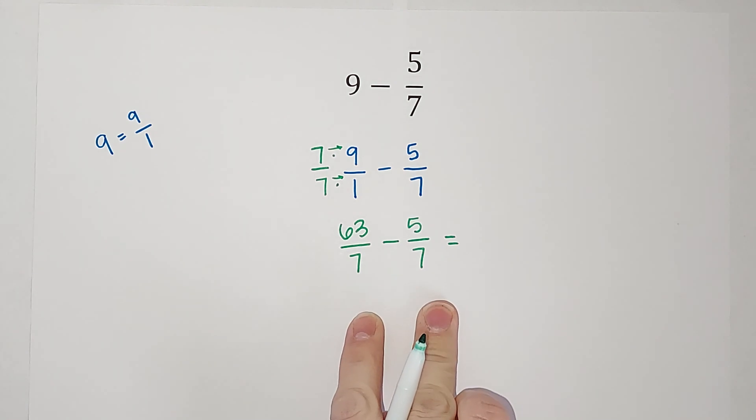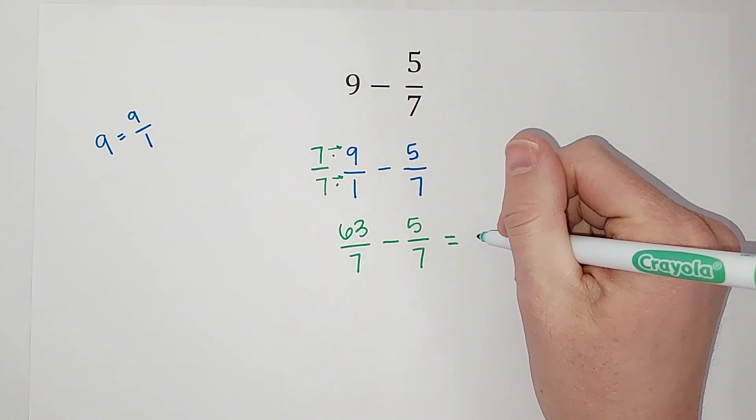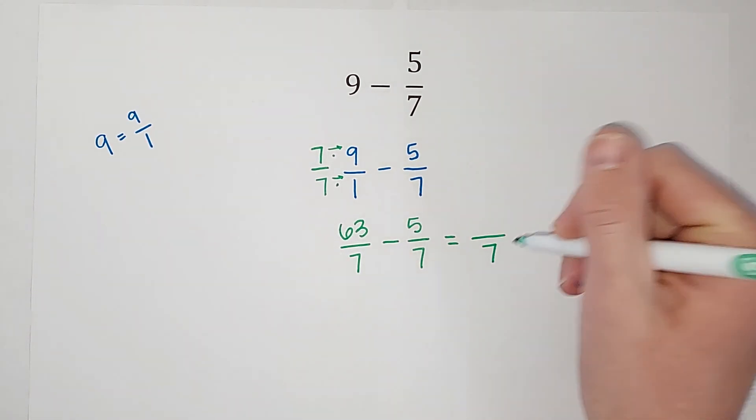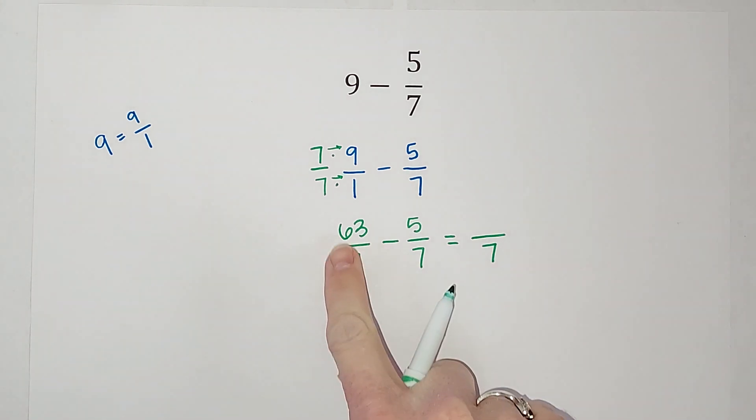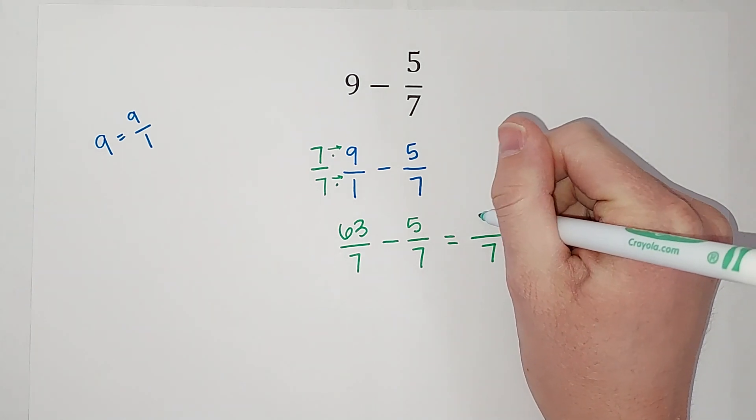Now that the denominators are the same, we're good to go. In my answer, the denominator is going to stay 7. And then I have 63 minus 5, which gives me 58.